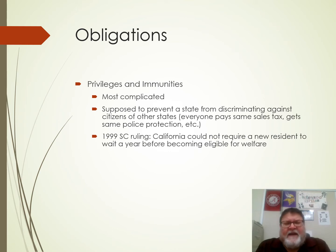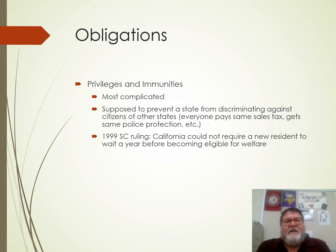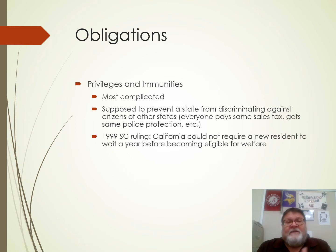This was addressed in a Supreme Court ruling in 1999. California passed a law that said new residents had to wait a year before they were eligible for welfare. The reason was that people on welfare from some states were going to California specifically because their welfare benefits were better. California decided they couldn't have people just come in because they paid more. It turns out the Supreme Court said they can't do that — if someone moves to your state, they're immediately eligible. You're discriminating against somebody from another state.